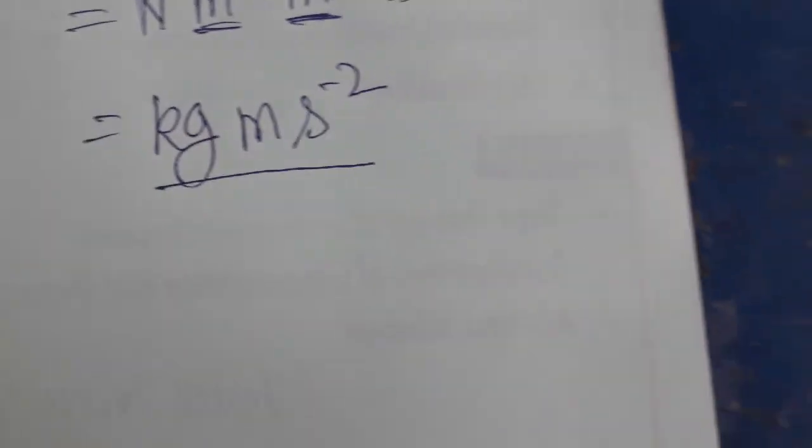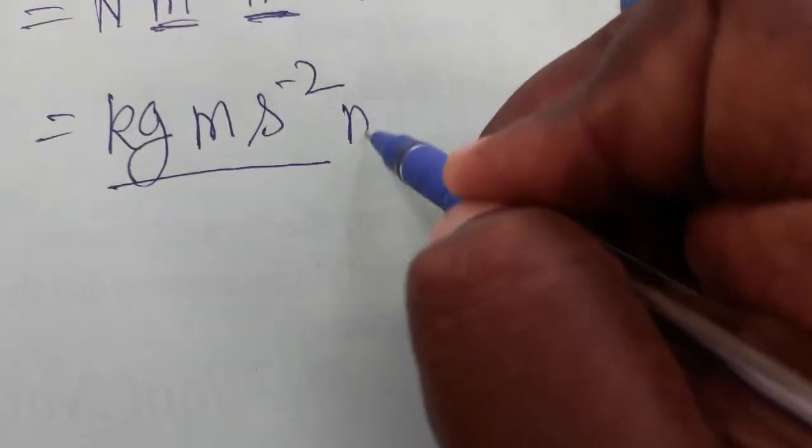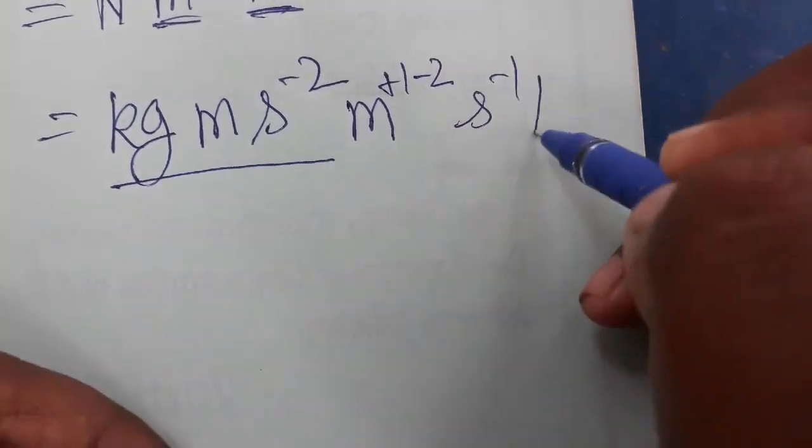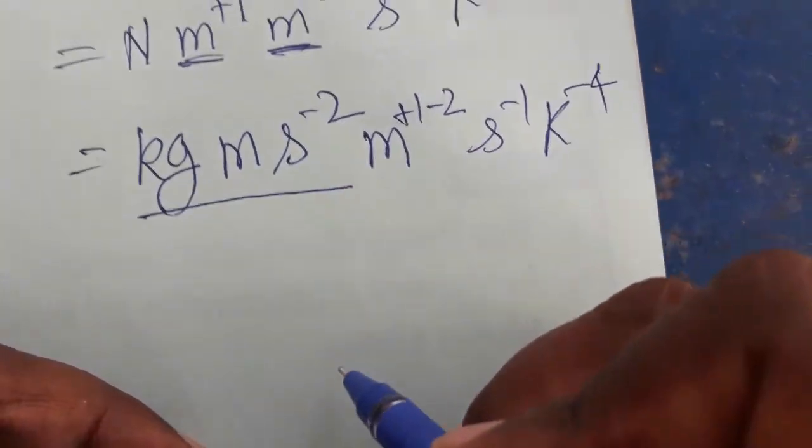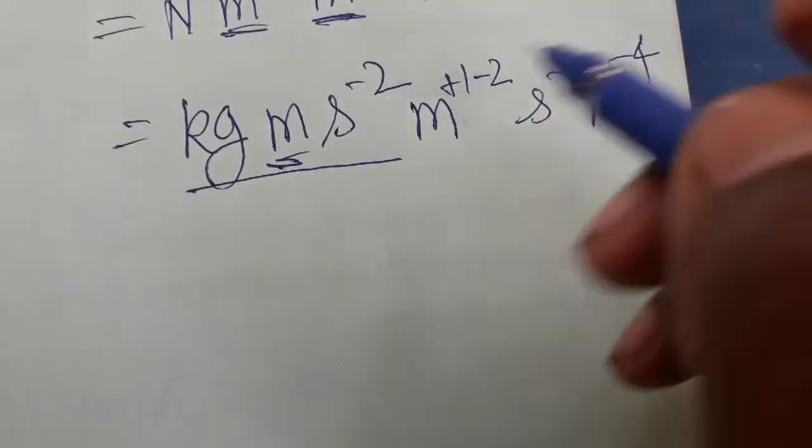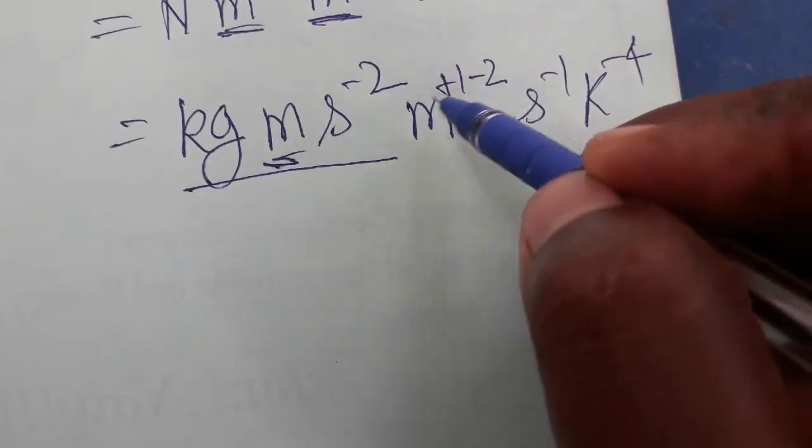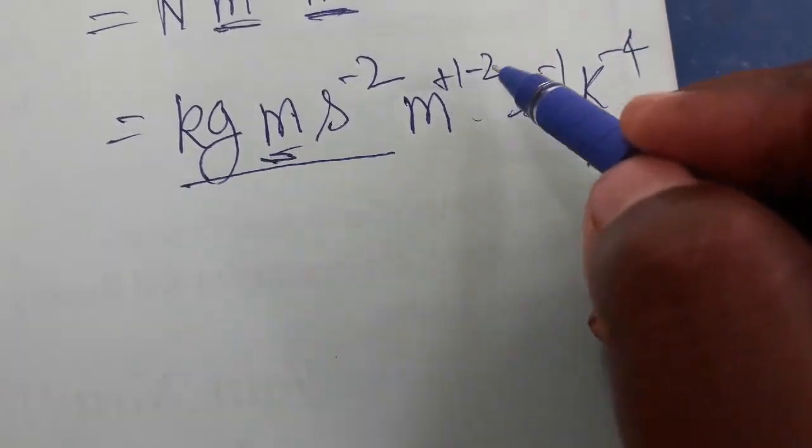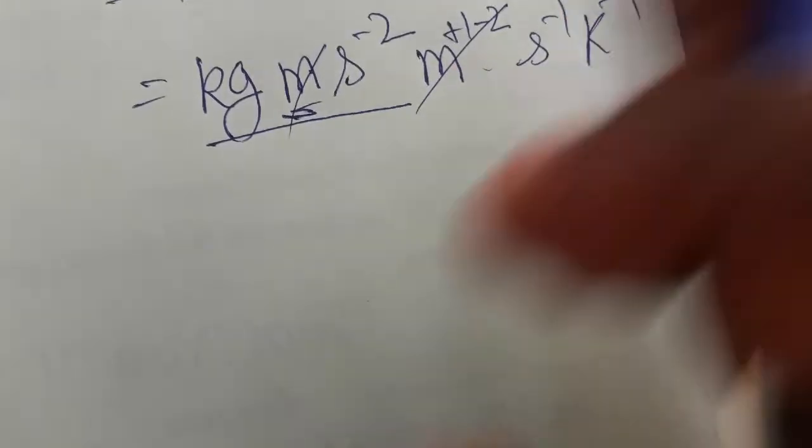See here, meter already plus 1 minus 2 is there and second minus 1, Kelvin power minus 4 is there. So meter, again here one more meter is there, so meter plus 2 and minus 2 we will get it as a cancel. Meter is not going to be there.